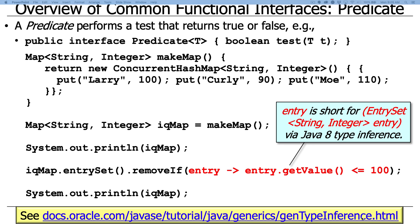In this particular context, entry is shorthand for open paren entry set less than string comma integer greater than entry close paren. And you could write that verbose expression if you chose. That would be a bit more explicit. But you don't need to. You can instead let the Java 8 type inference deduce that type information for you. So this is another nice feature that came with Java 8. It's able to do type inference or type deduction, allowing you to write more concise code. If you use Android Studio or IntelliJ or whatnot and you put your mouse over here, it'll give you an option to shift back and forth between this more verbose form and the more concise form.